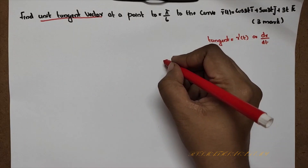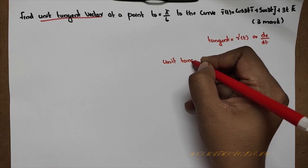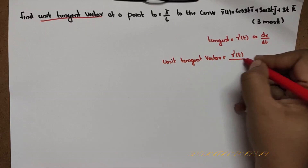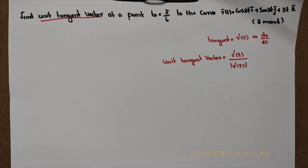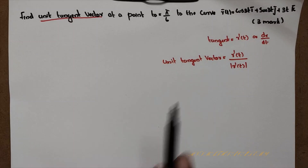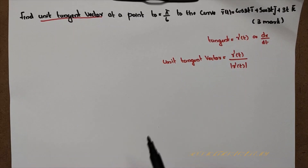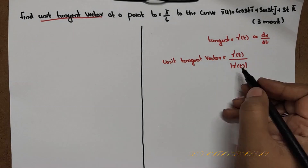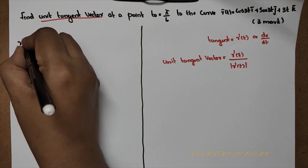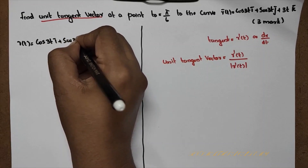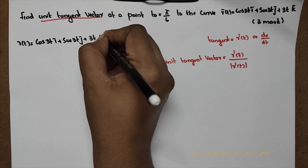What is the unit tangent vector? The unit tangent vector is T = r' divided by the modulus of r'. This is the formula. The given vector r(t) is: cos3t·i plus sin3t·j plus 3t·k.